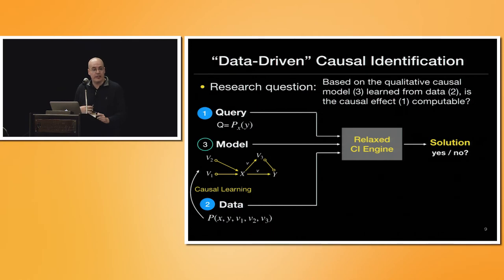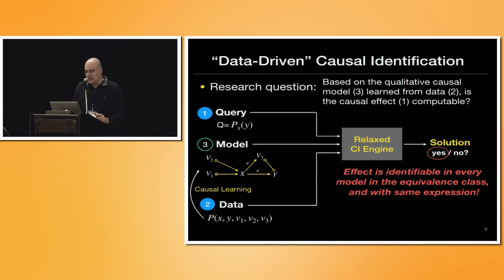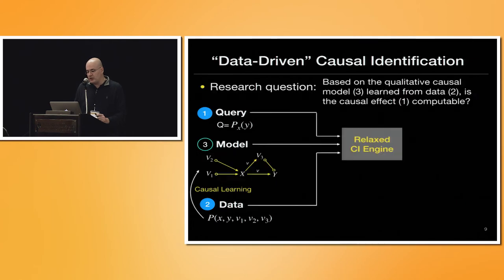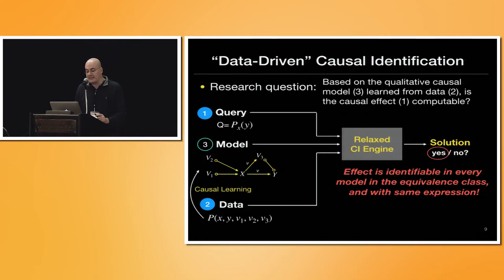Can you decide if the query Y do X is computable from the observational distribution with whatever summary graph or PAG you learn? Note here that the yes means that the effect identifiable means the effect is identifiable in every model in the equivalence class and have the same expression. Otherwise, I wouldn't be able to know which one to pick.